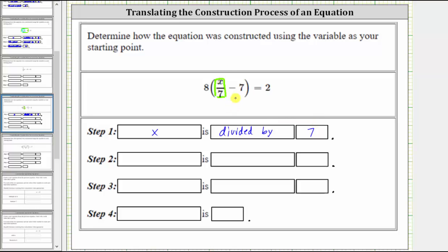Looking inside the parentheses, notice we have this minus 7, which means the quotient of x and 7 is decreased by 7 for step 2.